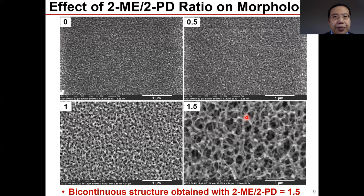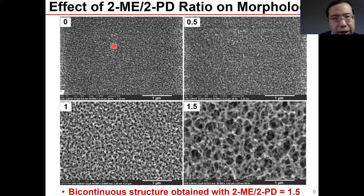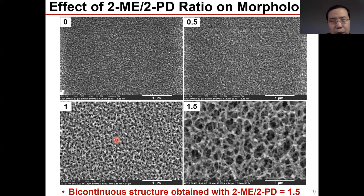Here we show the effects of the 2ME-to-2PD ratio on substrate surface morphology. When there is no 2ME, the surface pores are very small and very dense. As we add more 2ME, the surface pores start to open up, though still somewhat dense. When the ratio reaches 1.5, that is the best result — you can see a clear bicontinuous structure in the substrate.